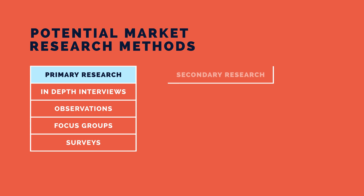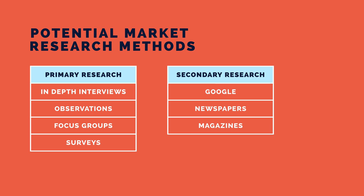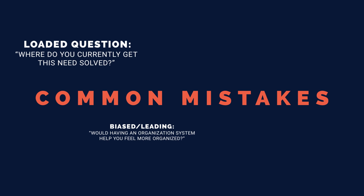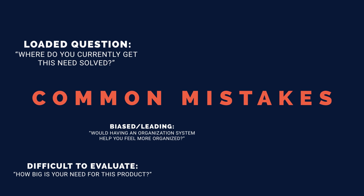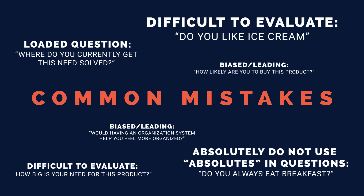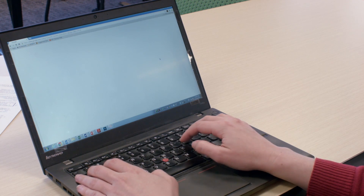Many people assume that either surveys or Google are the easiest and fastest market research methods. While getting numbers can be valuable, there are a couple challenges with these methods. Survey questions can be hard to craft in a way that aren't biased, and results can be difficult to interpret and tend to be scrutinized. And if data is already on Google, it's old news, having been discovered by countless others.